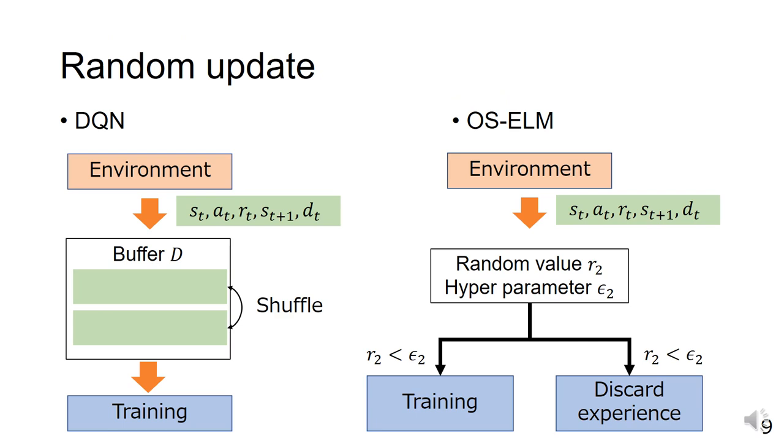As the third technique, we use the random update. This technique decides whether or not to perform sequential learning in OS-ELM based on a random probability. In DQN, experience is stored in a buffer and data is obtained from it to reduce the dependency on time series. This technique is not suitable for execution on edge devices because it requires a large experience buffer.